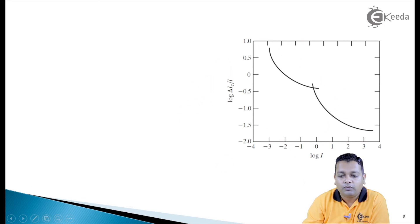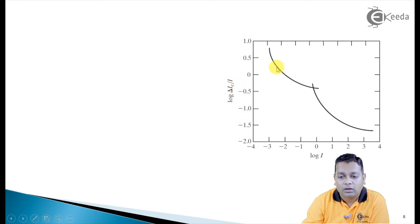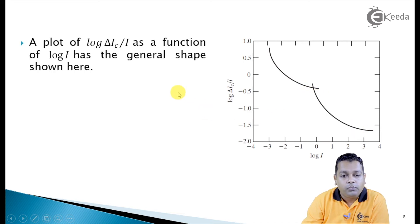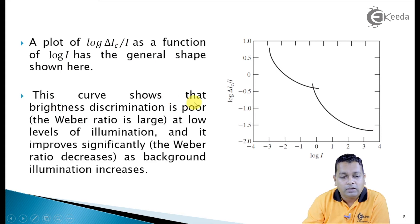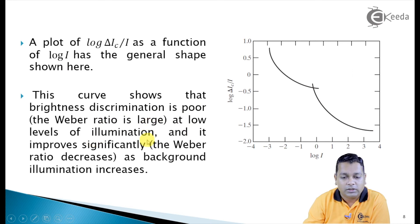A plot of log(delta-I_c / I) as a function of log(I) has a characteristic shape. This curve shows that brightness discrimination is poor — the Weber ratio is large — at low levels of illumination, and it improves significantly as the background illumination increases.